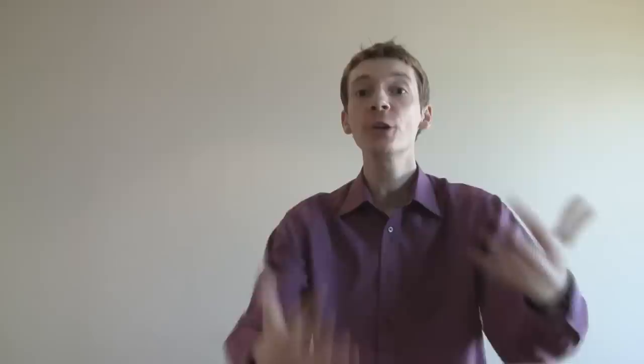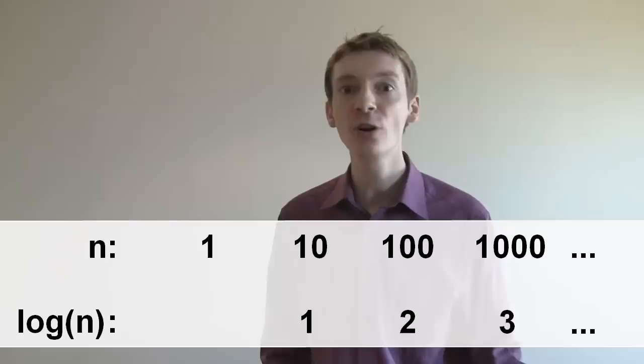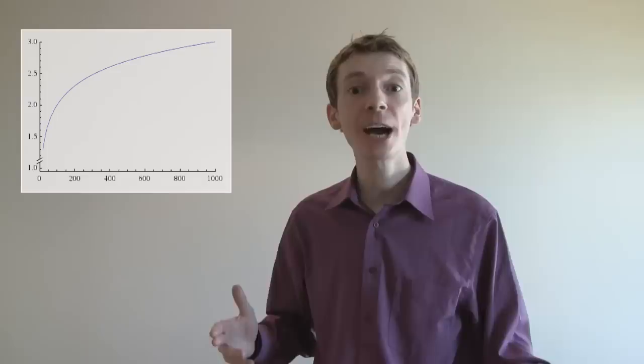Now log, or logarithm to the base 10, is the reverse of that. So if you give me a number, I can give you the original power. So for example, log of 1000 is 3, log of 100 is 2, log of 10 is 1, and log of 1 is 0. And you can connect those points together, and work out log of things in between. So log of 50 is 1.7.